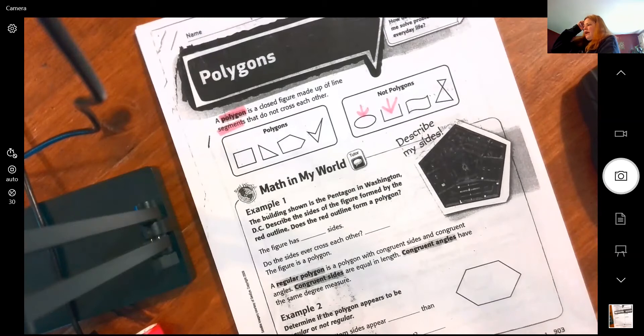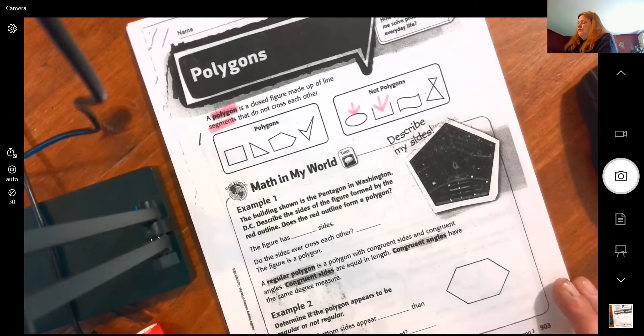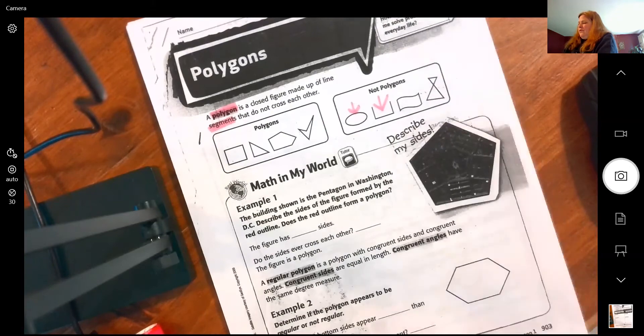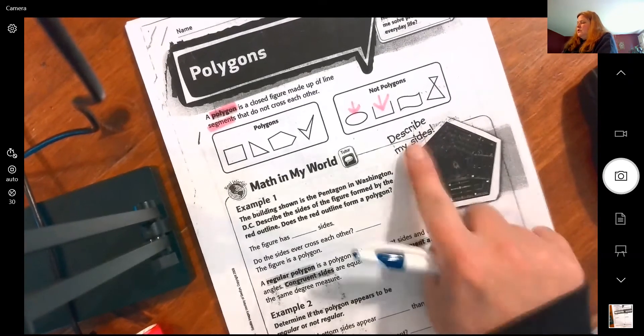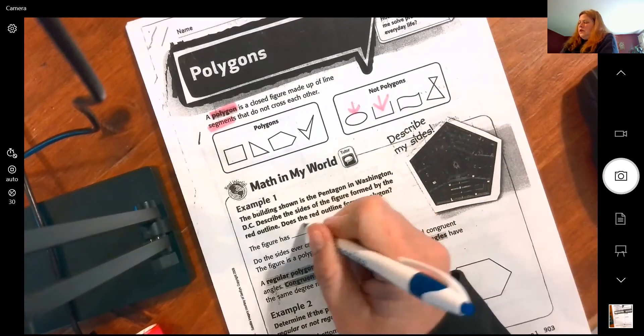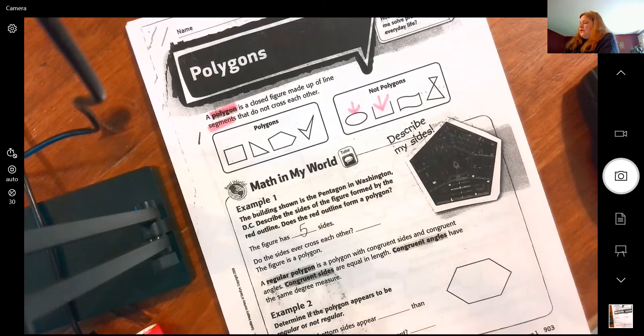A building shown is the Pentagon in DC. Describe the shape of the figure formed by the red outlines. The figure has how many sides? Do the sides cross each other? No. Is it closed? Yes.